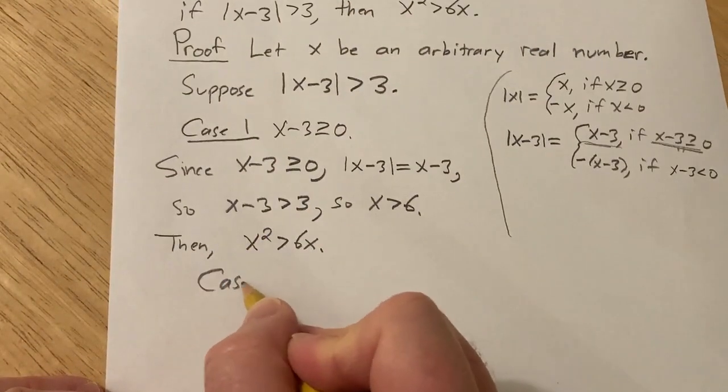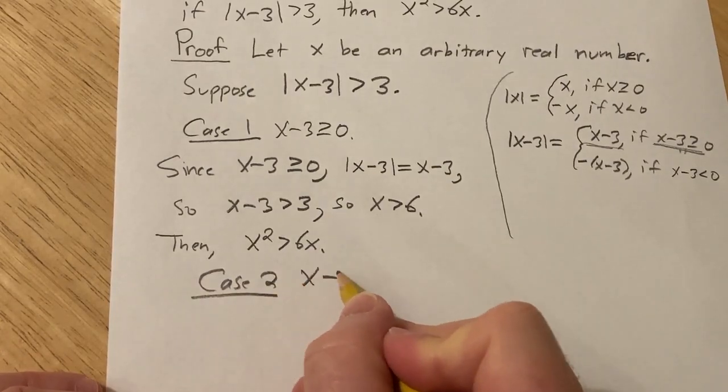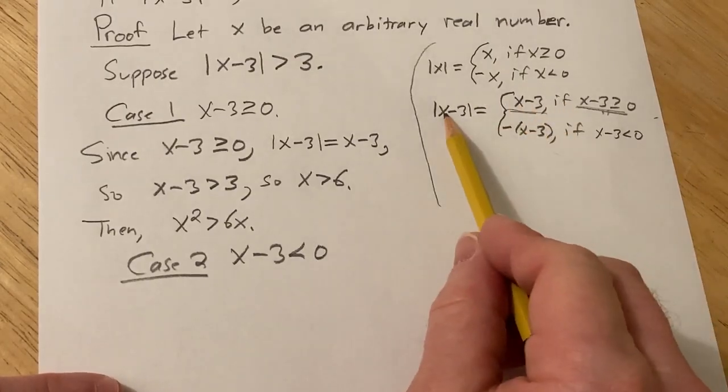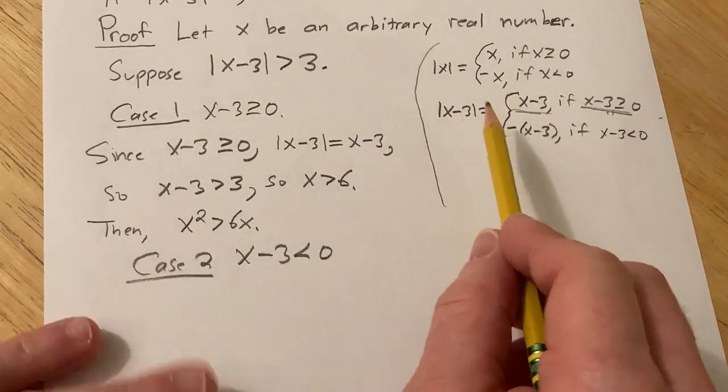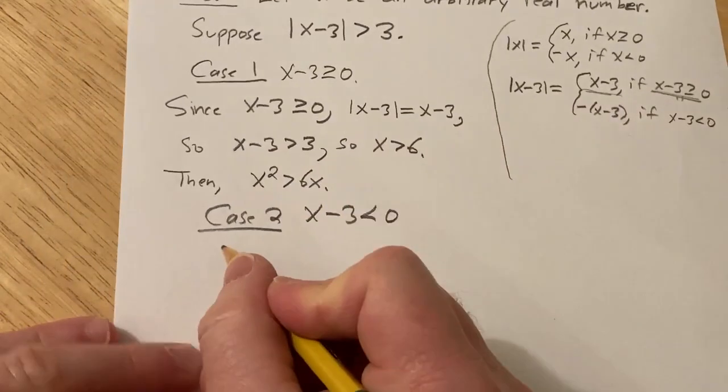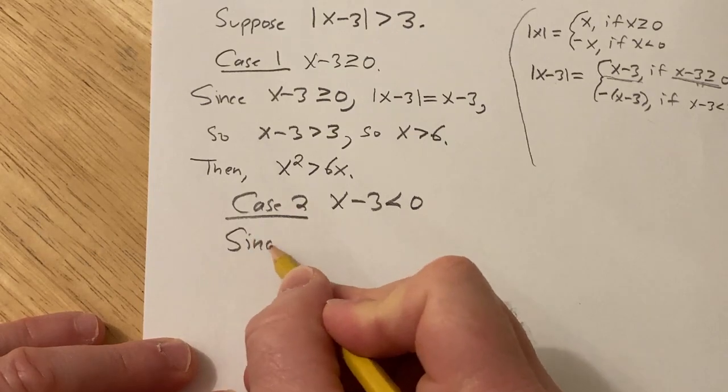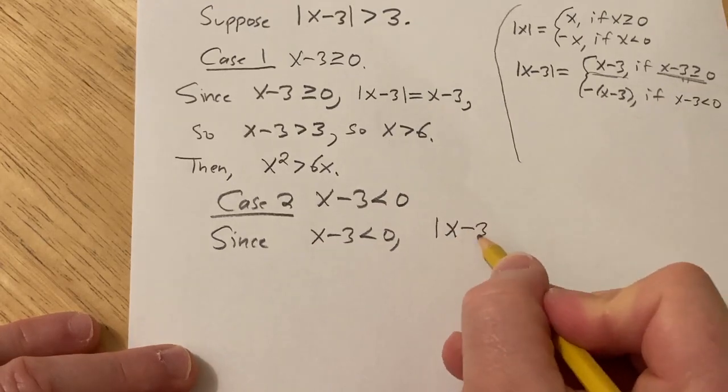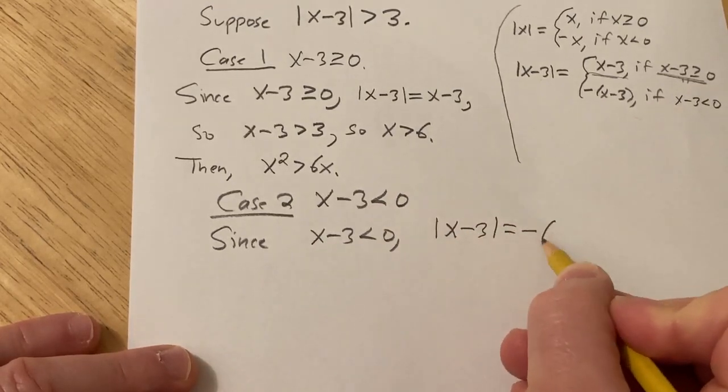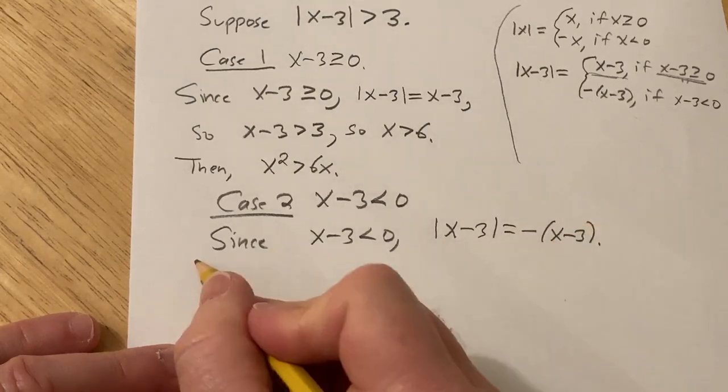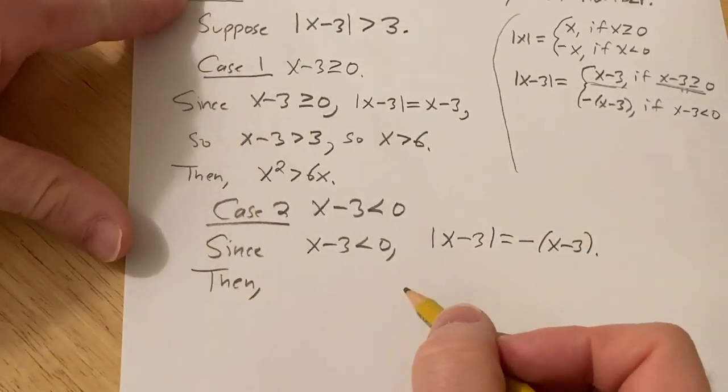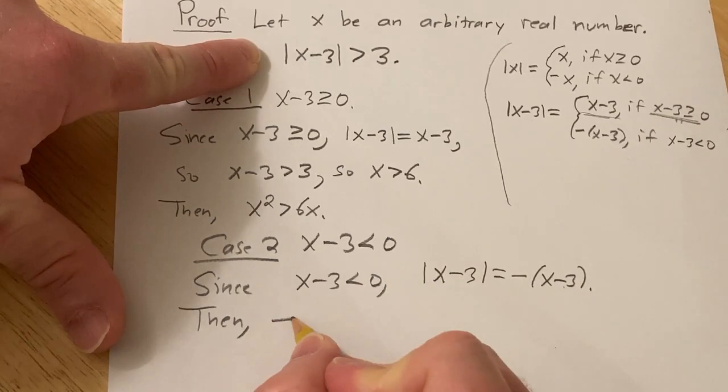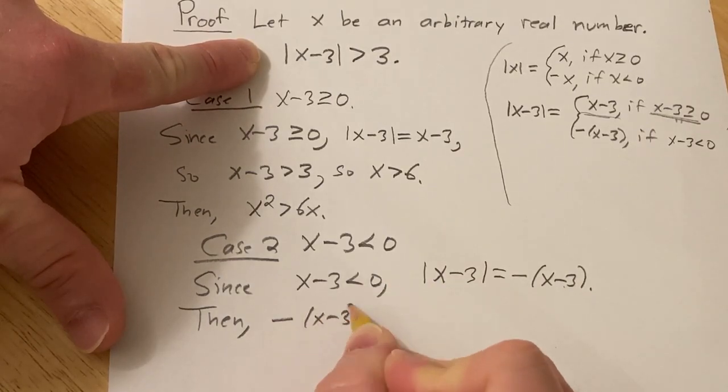Let's do case 2. Case 2 is x minus 3 less than 0. And you see, I'm getting the cases from here, from the definition of absolute value applied to x minus 3. Basically, just the definition of the absolute value function. So in this case, we can say since x minus 3 is less than 0, we have the absolute value of x minus 3 equal to minus parentheses x minus 3. Then, so again, we have this here. So basically this is this. So then we have negative x minus 3 greater than 3.